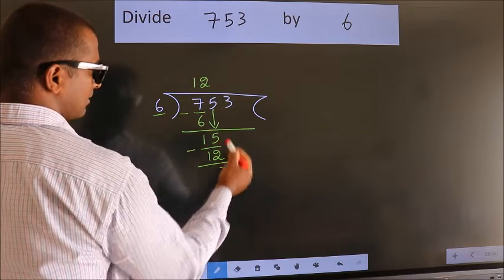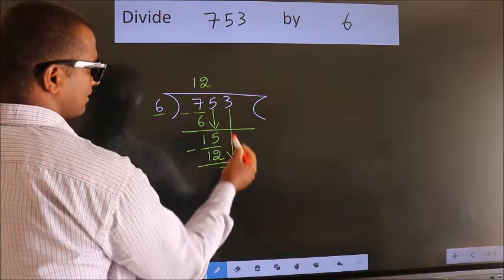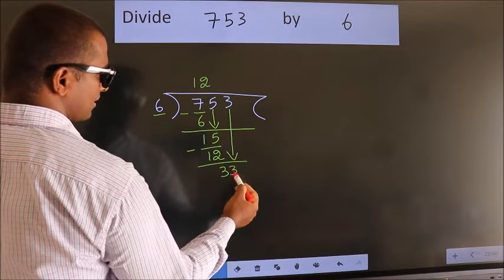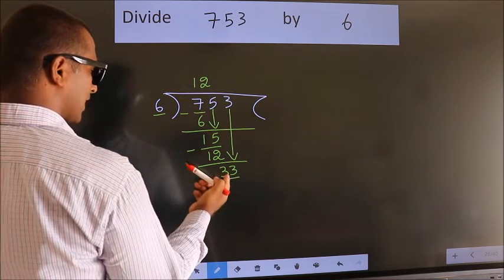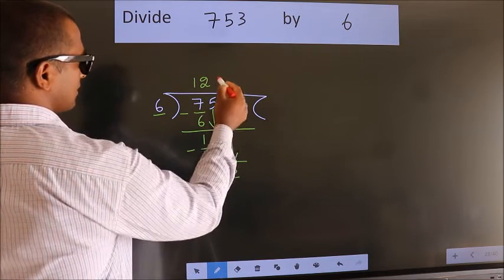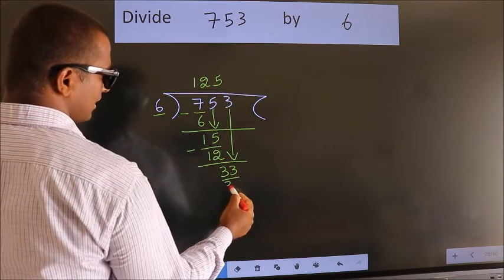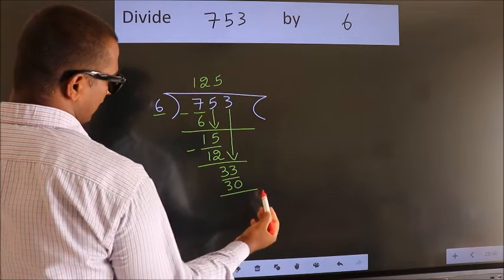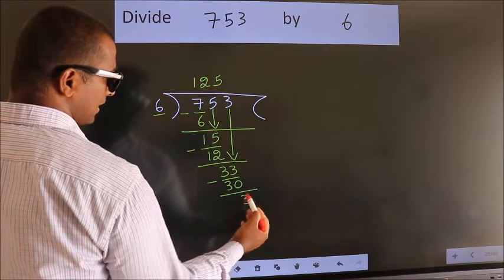After this, bring down the beside number. So 3 down, so 33. A number close to 33 in 6 table is 6 fives, 30. Now we subtract. We get 3.